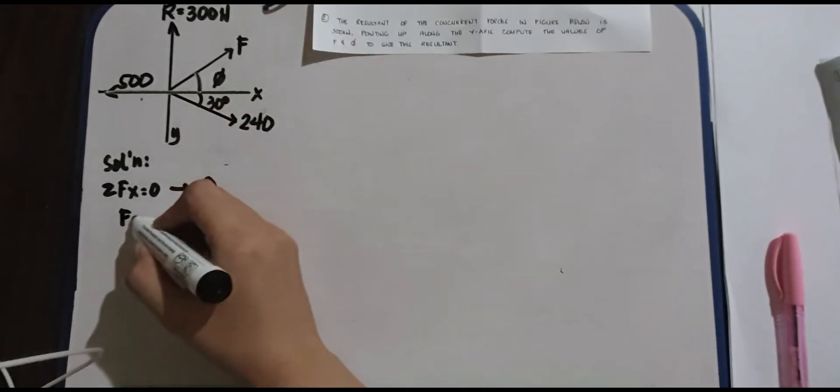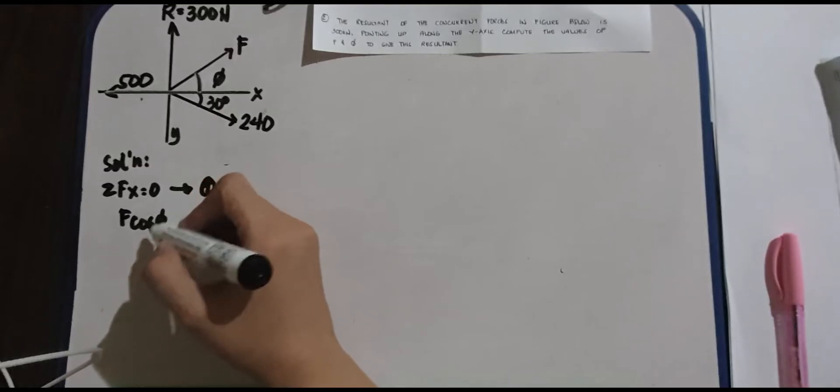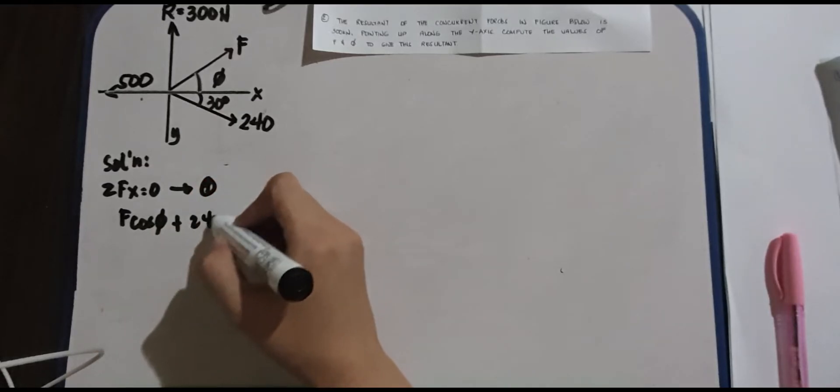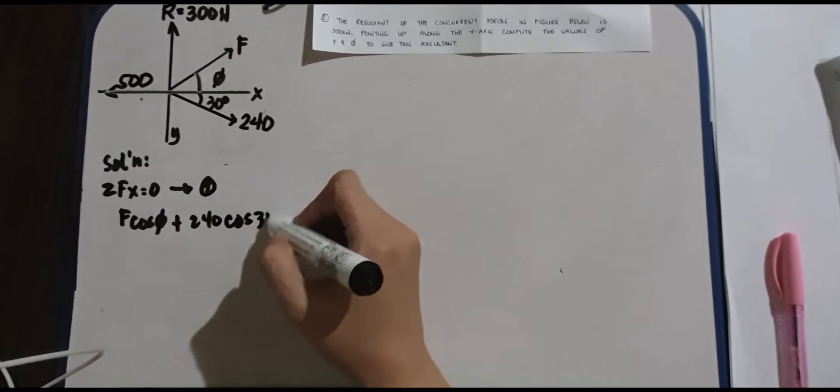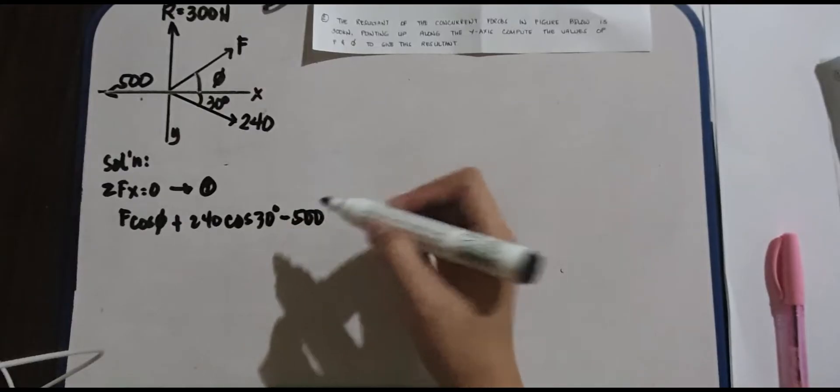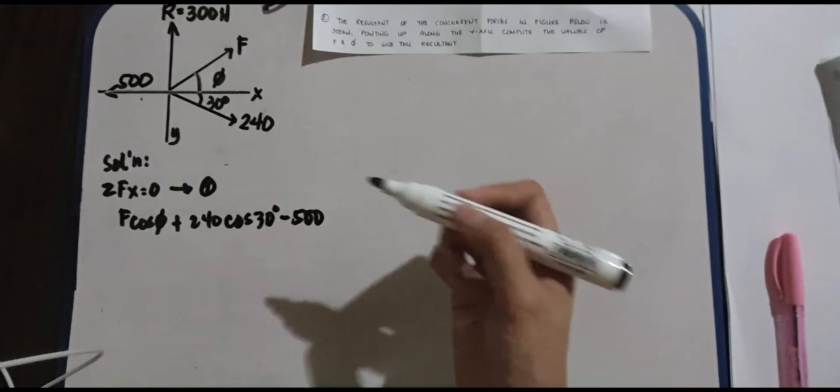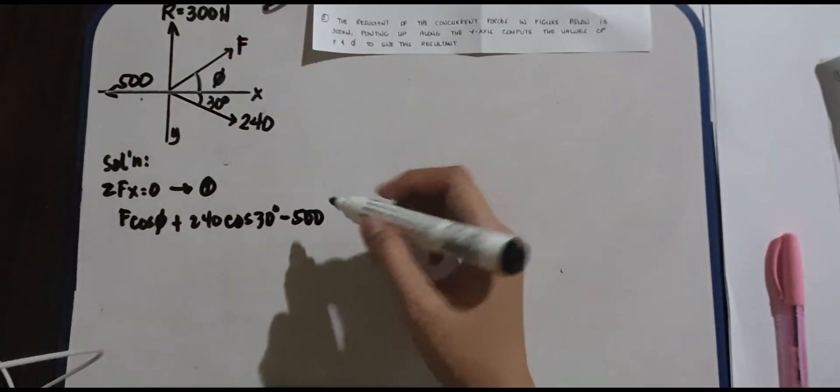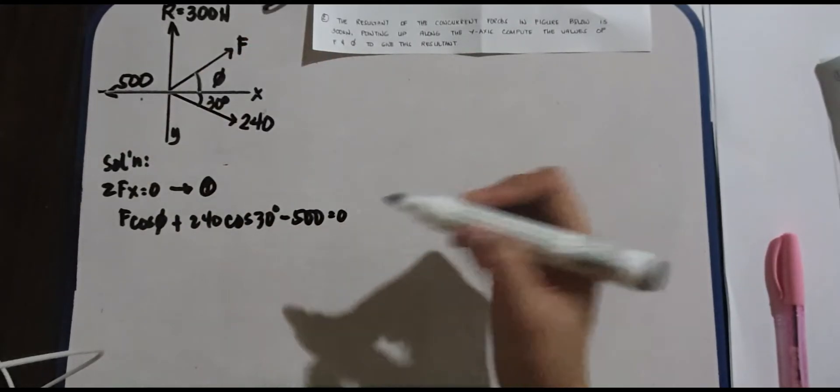Plus 240 cosine of 30 degrees, and then we have 500 which is negative. Why doesn't it have cosine and sine? Because this is along the X-axis, equals 0.